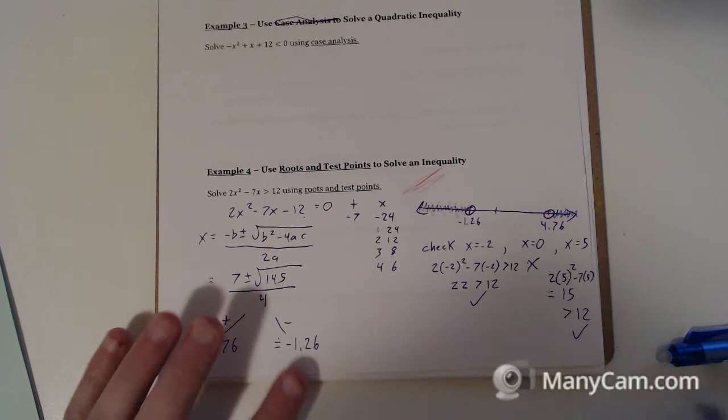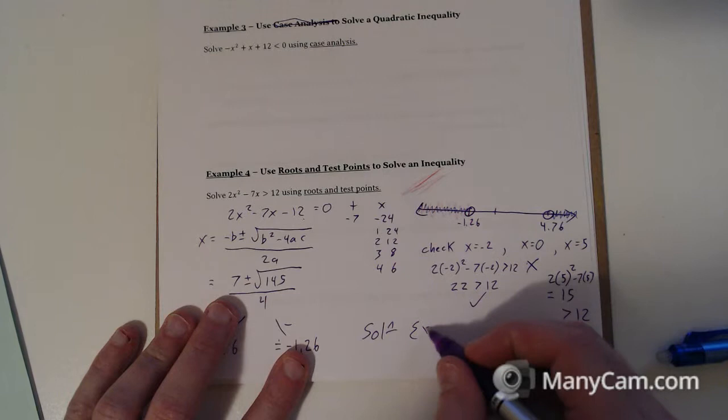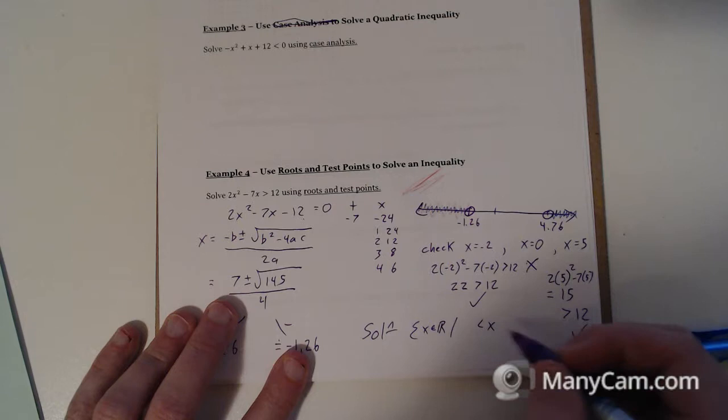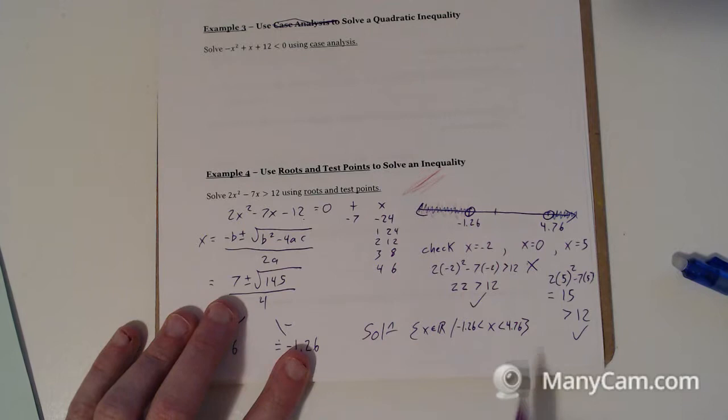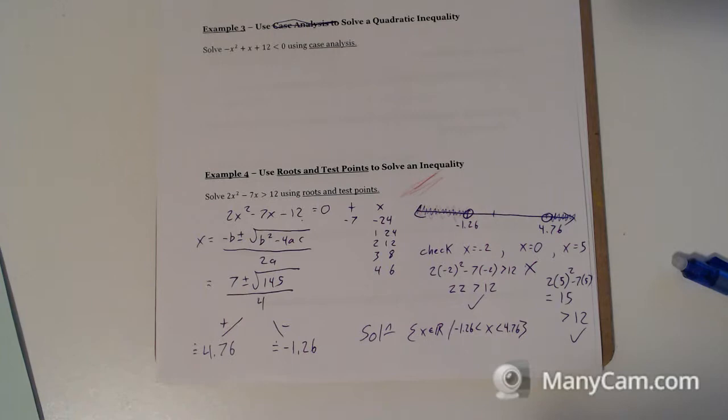And then we state the answers. So use the root and test point to solve the inequality. So solutions are the set where x is real numbers, so long as x is between negative 1.26 and 4.76. And it cannot be equal to. It has to be strictly greater than. So it cannot be equal to there. Okay, there's that one.